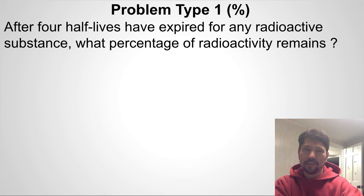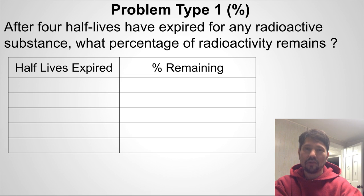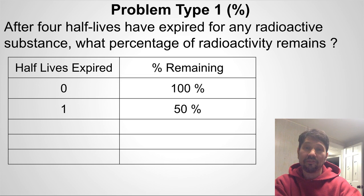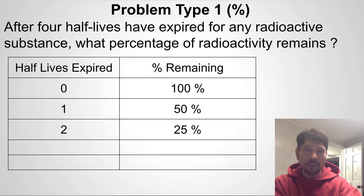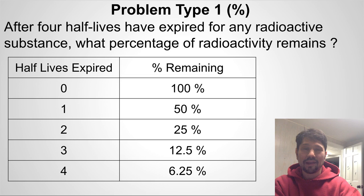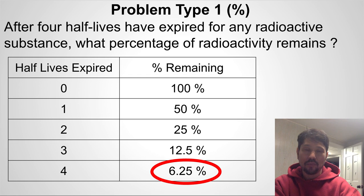Let's start by building our table — half-lives expired on the left and percent remaining on the right. Initially, no half-lives have expired and we've got 100% of our radioactivity. After one half-life, we'll have only 50% remaining, because by definition a half-life is the amount of time it takes for radioactivity to drop in half. After a second half-life we drop to 25%, after a third to 12.5%, and after a fourth to 6.25%. Please circle your answer so it's obvious — the correct answer is 6.25%.